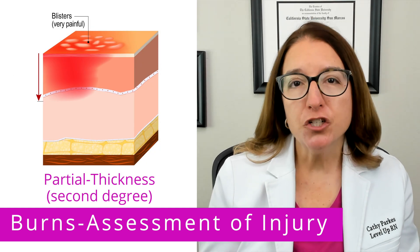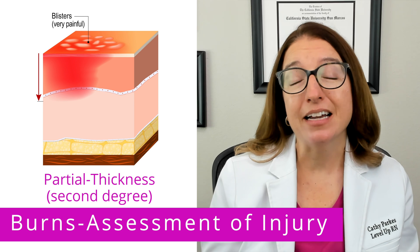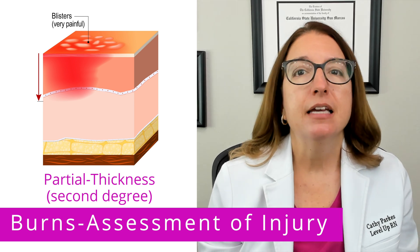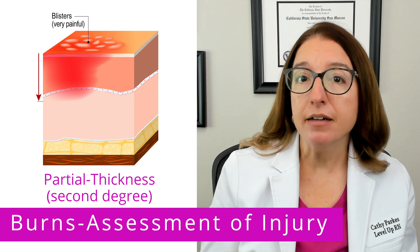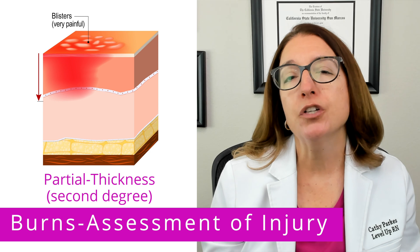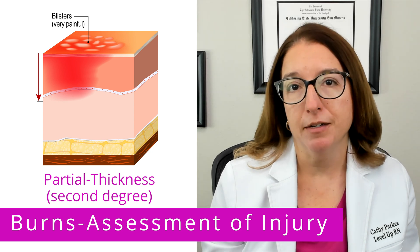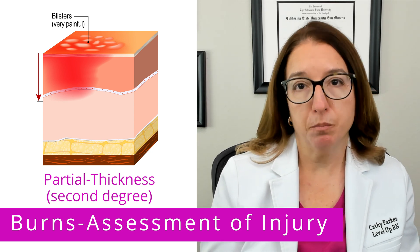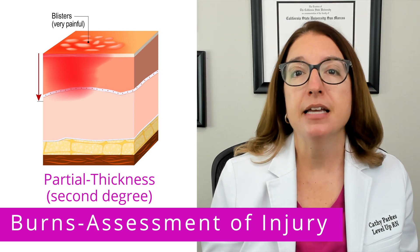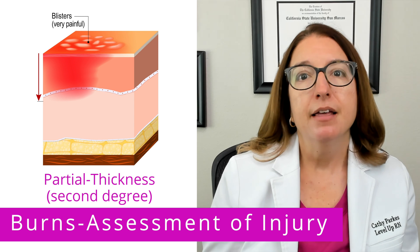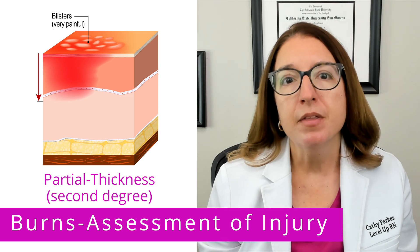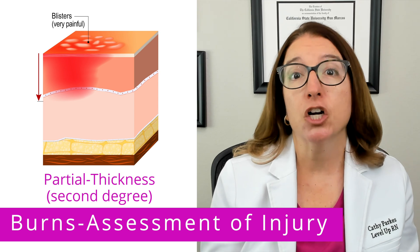With a superficial partial thickness burn, which is a second-degree burn, damage occurs to the upper part of the dermis. The affected area will be red in color and blisters will be present, and this type of burn usually heals with minimal scarring. With a deep partial thickness burn, which is still considered a second-degree burn, there is damage to the lower part of the dermis. The affected area is often yellow or white in color, and when the wound heals, scarring typically occurs.